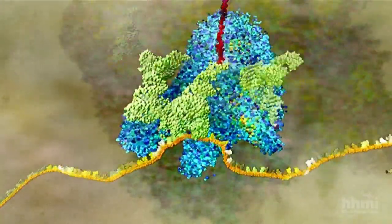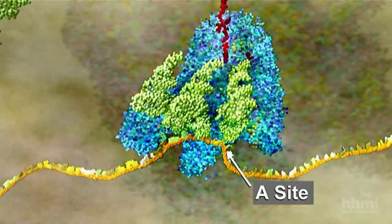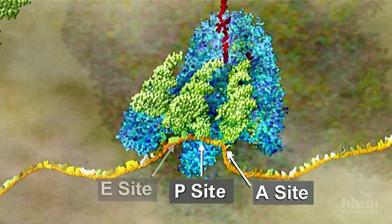There are three locations inside the ribosome, designated the A-site, the P-site, and the E-site.